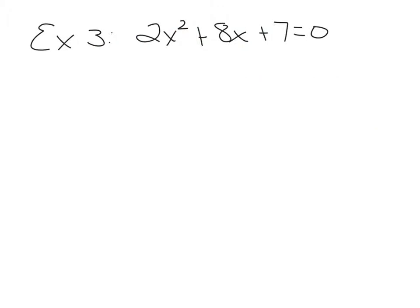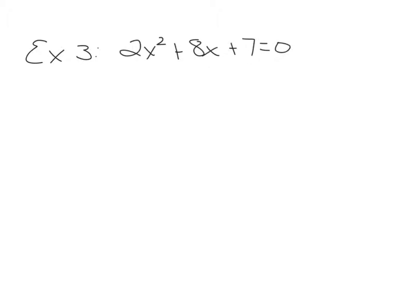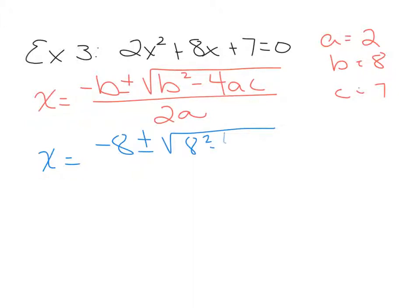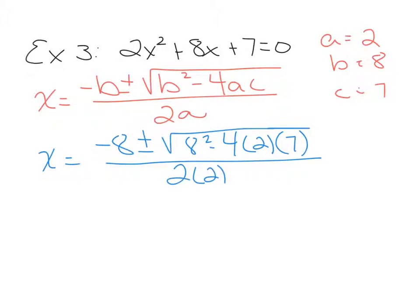Example 3 is on the top of page 235: solve using the quadratic formula, 2x² plus 8x plus 7 equals 0. First, make sure your equation equals 0 and terms are in descending order. Define A, B, and C: A equals 2, B equals 8, C equals 7. Write the formula: x equals negative B plus or minus the square root of B squared minus 4AC, all over 2A. Substituting: negative 8 plus or minus the square root of 8 squared minus 4 times 2 times 7, all over 2 times 2.